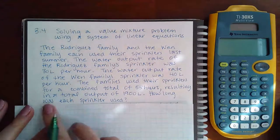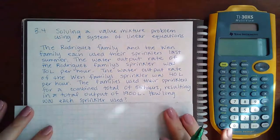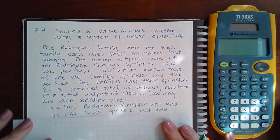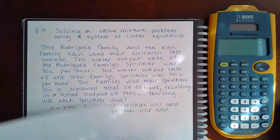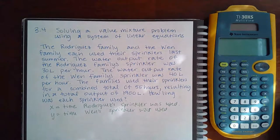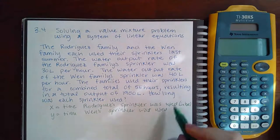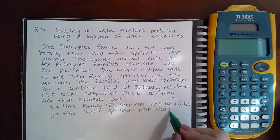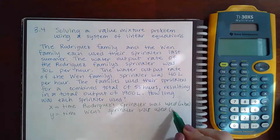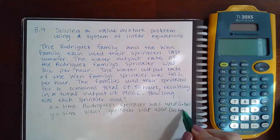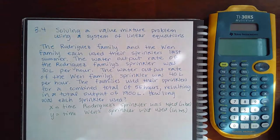Since I'm wanting to know how long the sprinklers were used, I let X equal the time the Rodriguez's sprinkler was used in hours, and Y equal the time the Wynn's sprinkler was used in hours. So that when I was done solving for X and Y, I would know exactly how long each family's sprinkler was used.